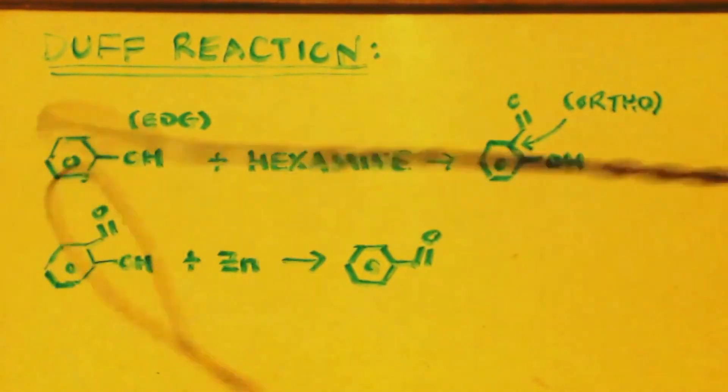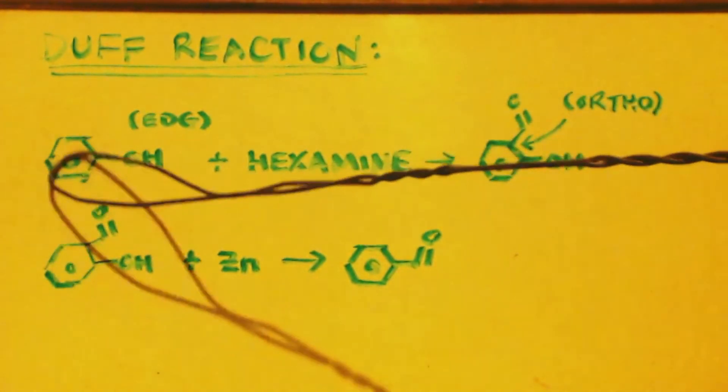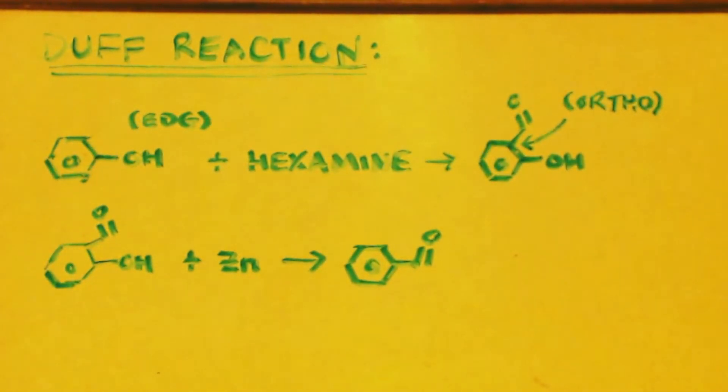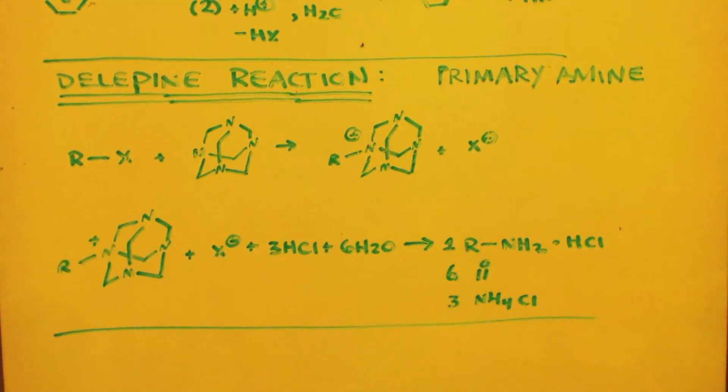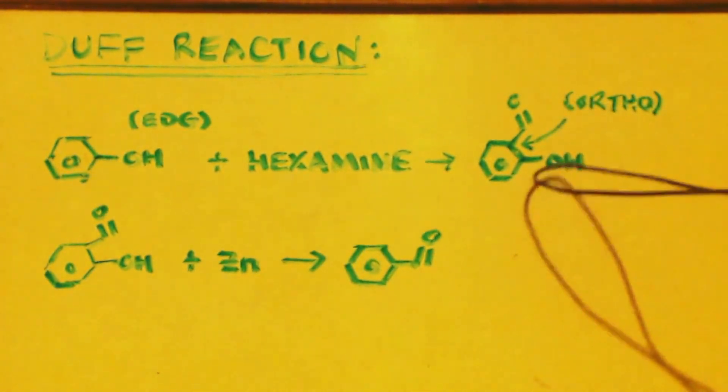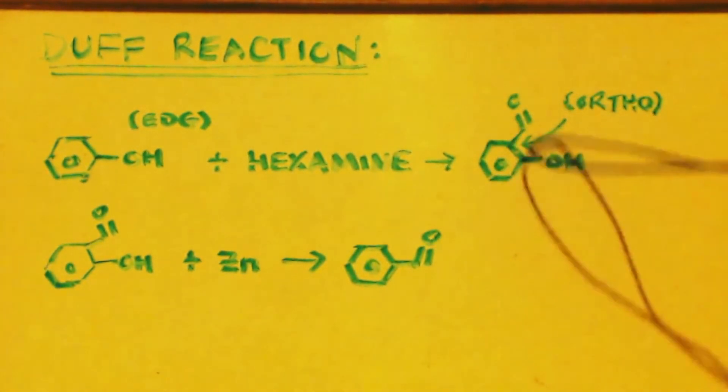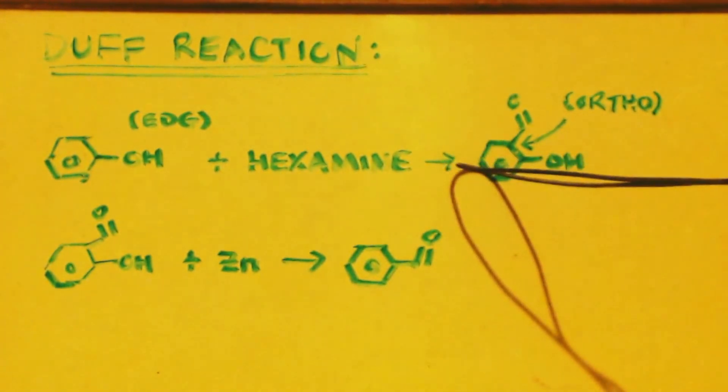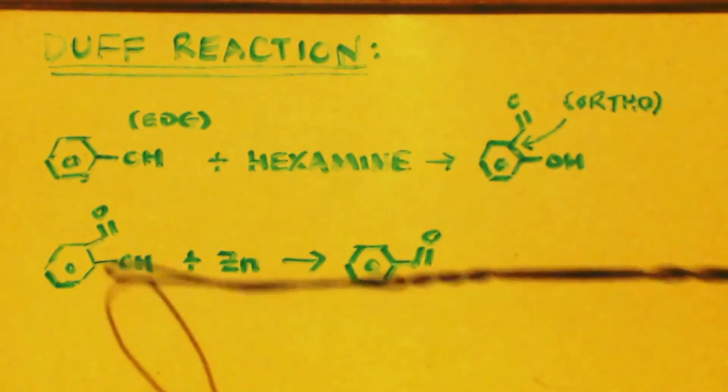The reason why this works is because you have to have an electron donating group attached to the ring in the first place that activates this ring. If it's electron donating, it's donating electrons into this already electron-rich pi resonance thing here. It activates it, makes it more negative, more electron density. Keep in mind, you probably need a strong electron withdrawing group - you can't just have an alkyl group on there, at least that's my guess.